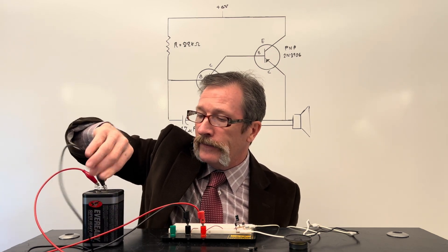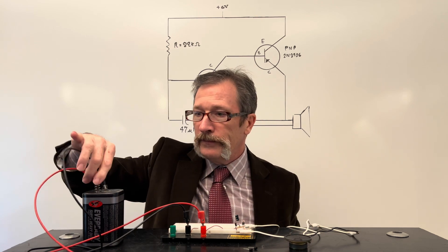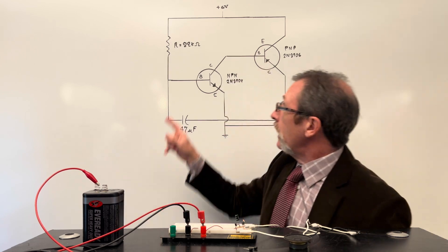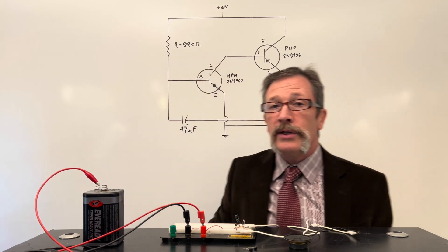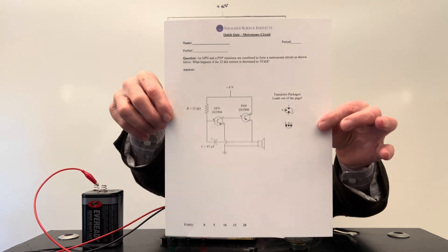So plug that in. Good. So our question today is what would happen to our circuit if I changed from a 22,000 ohm resistor down to a 10,000 ohm resistor. This is what your quiz looks like.